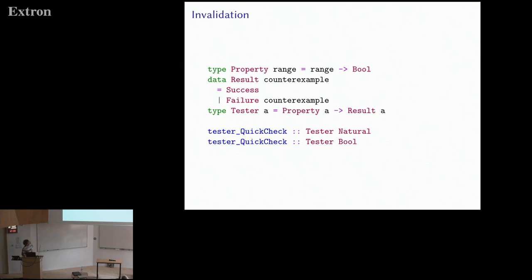So what do we do with such properties? We want to evaluate them for their correctness. At the end of the day, we want to get a result of this validation. It can either be a success, which means we didn't find any counterexamples, or it can be a failure when we did find a counterexample.